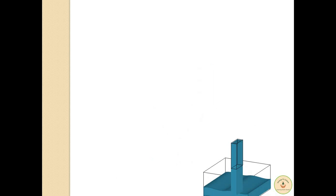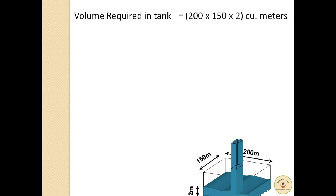Now let's see how to solve this. Firstly we need to find volume required in the tank. We know that the dimensions of the tank are 200m x 150m and the rise in water level required is 2m. So as per the formula for volume of a cuboid which is length x breadth x height, we get 200 x 150 x 2 cubic meters. We have already discussed this formula in our previous videos, the link of which is placed in the description box.